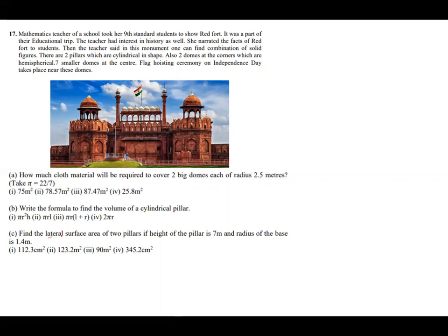Part c: Find the lateral surface area of two pillars of height 7 meter and radius of the base is 1.4 meter. Options are 112.3 centimeter square, 123.2 meter square, 90 meter square, and 345.2 centimeter square.